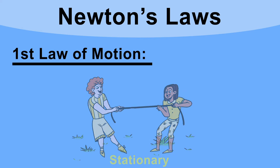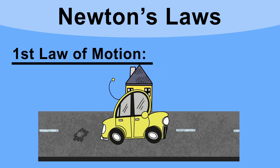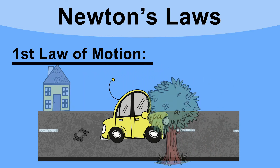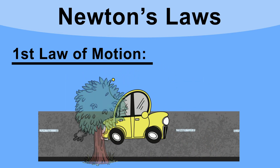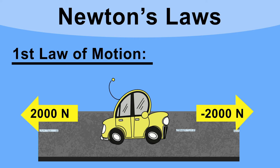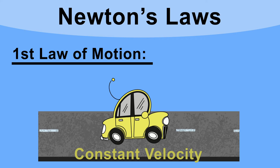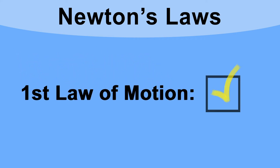Now let's look at a car driving at a constant speed of 40 miles per hour. There is a forward thrust from the engine of 2000 newtons, but also an air resistance or drag force of minus 2000 newtons. The resultant force is again zero, but this time the car is not stationary — it is moving at a constant velocity. That is Newton's first law.